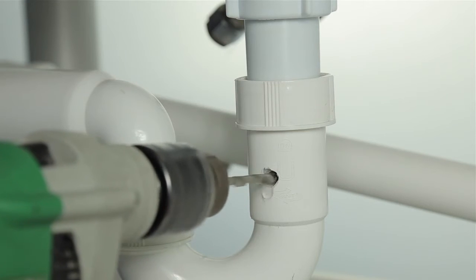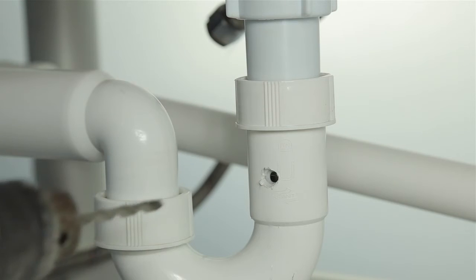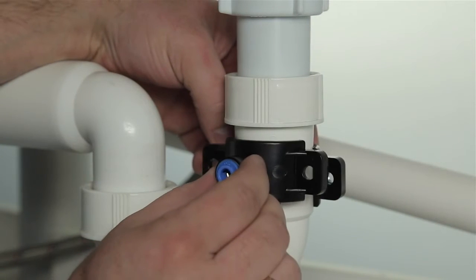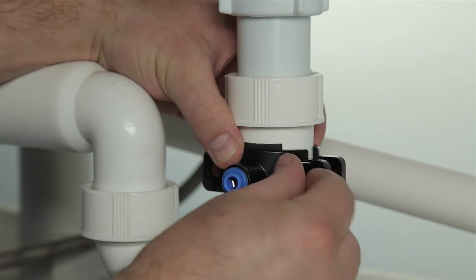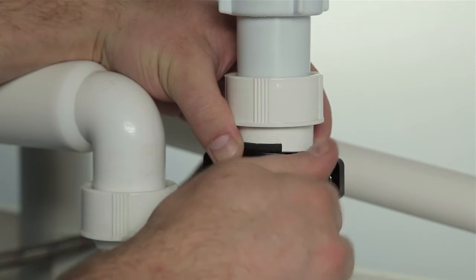Drill a hole of 5 mm diameter in the kitchen sink drain pipe. Connect the drain saddle with the drain pipe from the kitchen sink. The drain saddle is compatible with most standard drain pipes.